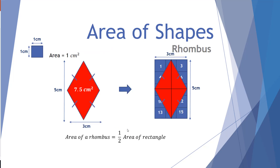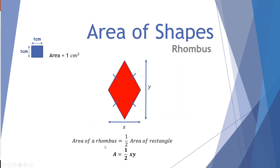Let's move on to a rhombus. A rhombus has four side lengths of the same size. This one is 5 high and 3 wide. Moving it across on our grid, you can see it is definitely covering exactly half of the surrounding rectangle. Each quarter is half red and half blue, both top and bottom. So a rhombus covers half the area of the rectangle of the same height and width. For rhombuses we use y for the height and x for the width — like the axes on a graph — giving us the equation: area equals half x times y.